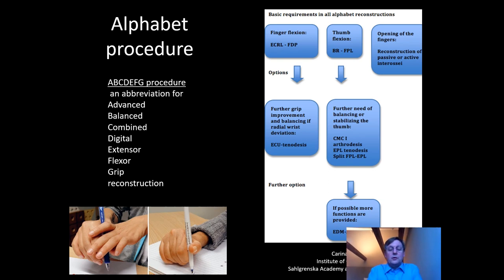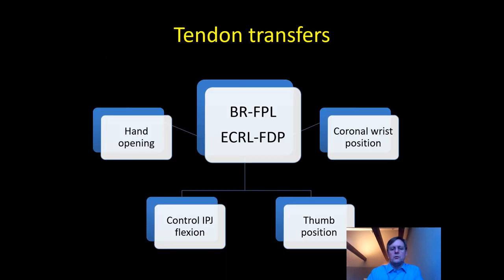The ALPHABET stands for Advanced Balance Combined Digital Extensor Flexor Grip Reconstruction, A through G. The workhorse is brachioradialis for FPL and ECRL for FDP — the latter being synergistic and a much easier transfer to learn. You combine that with intrinsic reconstruction to help with hand opening, some tenodesis to control IPJ flexion of the thumb, and potentially tightening of ECU to rebalance the wrist. The centre of it is the tendon transfers, and you can add whichever bits you want to adjust wrist position, thumb positioning, and hand opening.